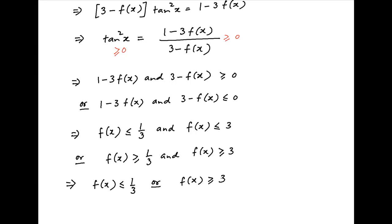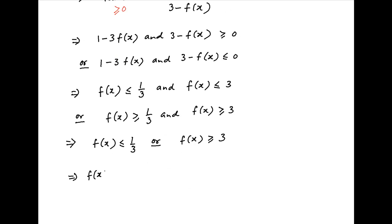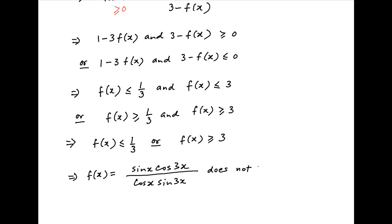In other words, the function f(x) holds values that are either less than or equal to 1/3, or greater than or equal to 3. Therefore, the given function (sin x · cos 3x) / (cos x · sin 3x) does not hold values that lie between 1/3 and 3, which is the required result.